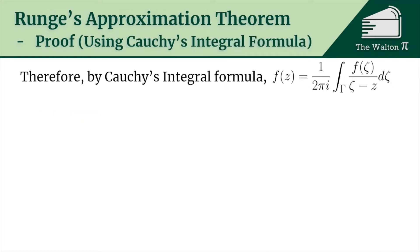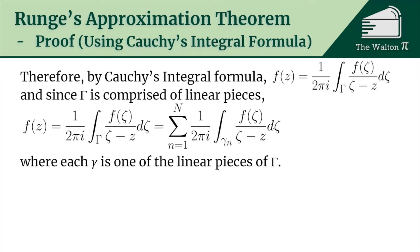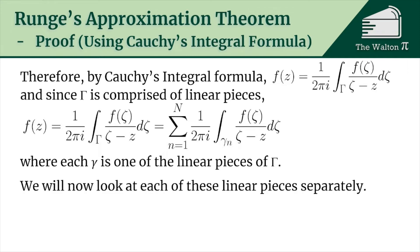Now let's look at Cauchy's integral formula, which says that f(z) equals 1 over 2 pi i times the integral over gamma of f(zeta) divided by (zeta minus z) d-zeta. Since gamma is comprised of linear pieces, we can rewrite that integral as a sum of integrals over linear pieces gamma_n, where each gamma_n is one linear piece of the full loop big gamma.